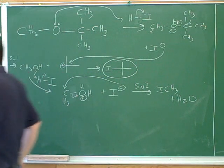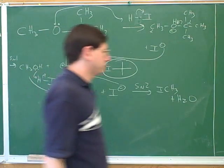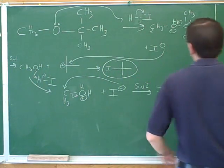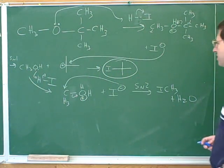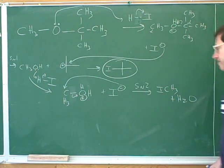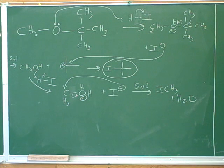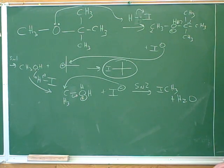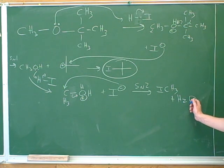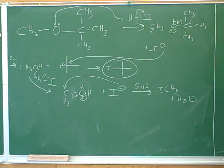If you look at your notes from the last example, we had a symmetrical ether, so we got two equivalents of the same product after the two attacks. But with an asymmetrical ether, we had two different products on the left and the right-hand sides. Notice that ultimately we kept going until the oxygen had been completely kicked off the carbons.